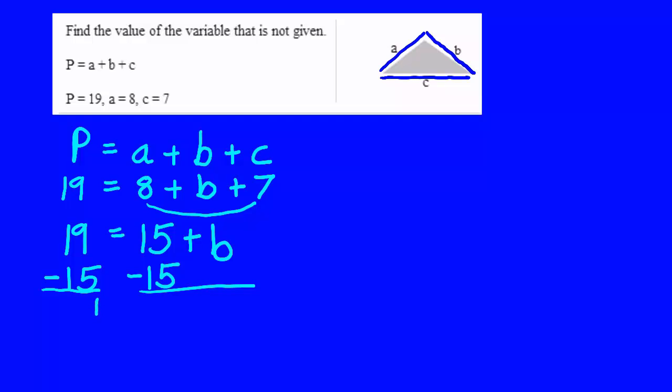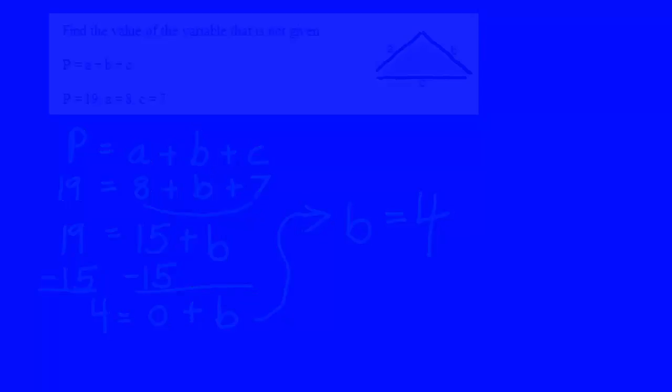Now on the left 19 minus 15 is 4. On the right 15 minus 15 is 0. And then bring down the plus B. And we know what 0 plus B is, right? So now we know that side B is 4 units long. This is the way we use formulas.